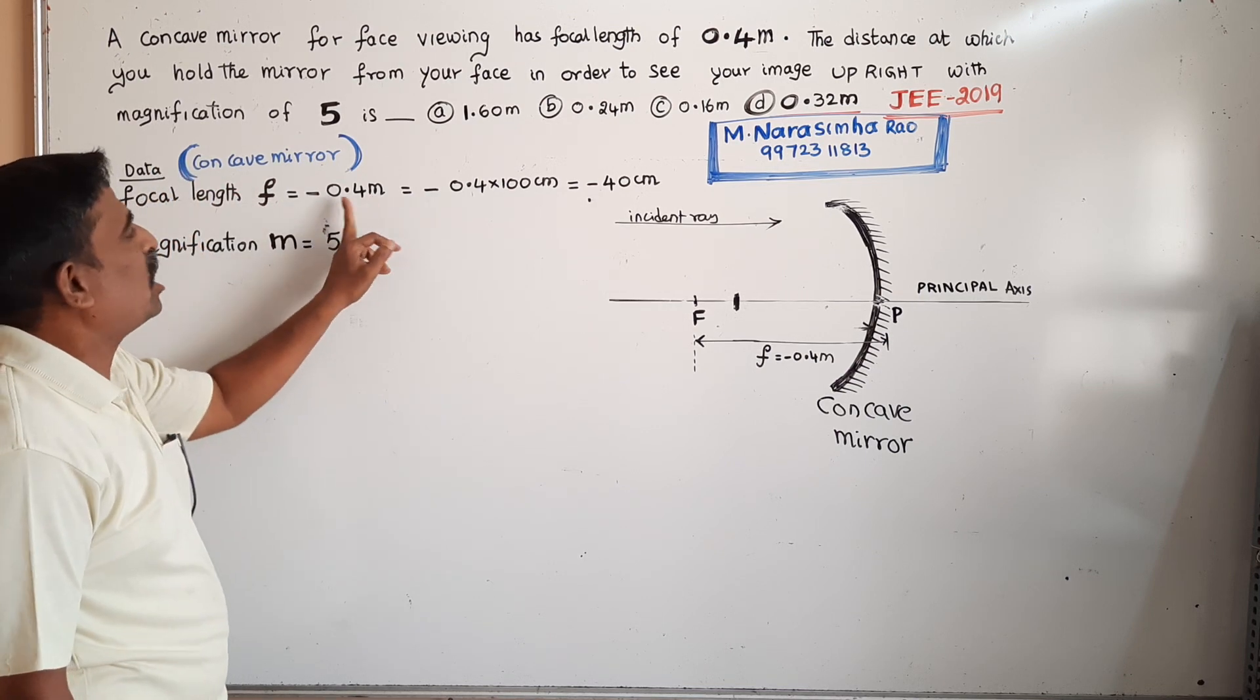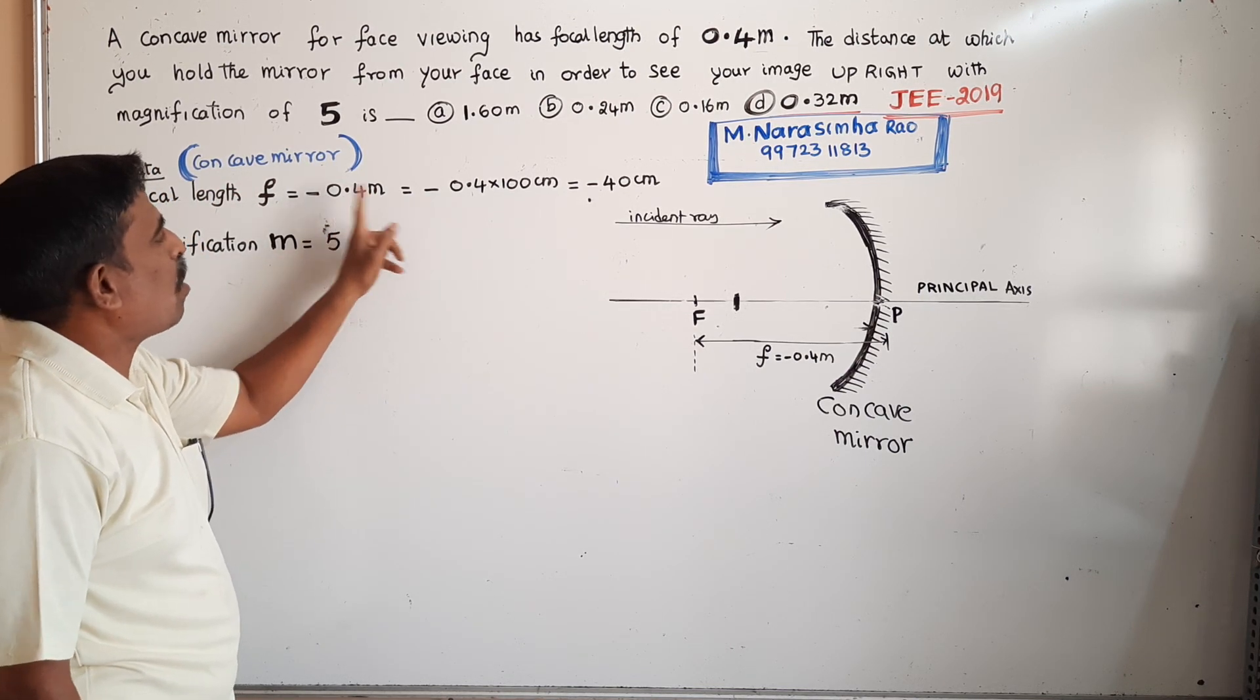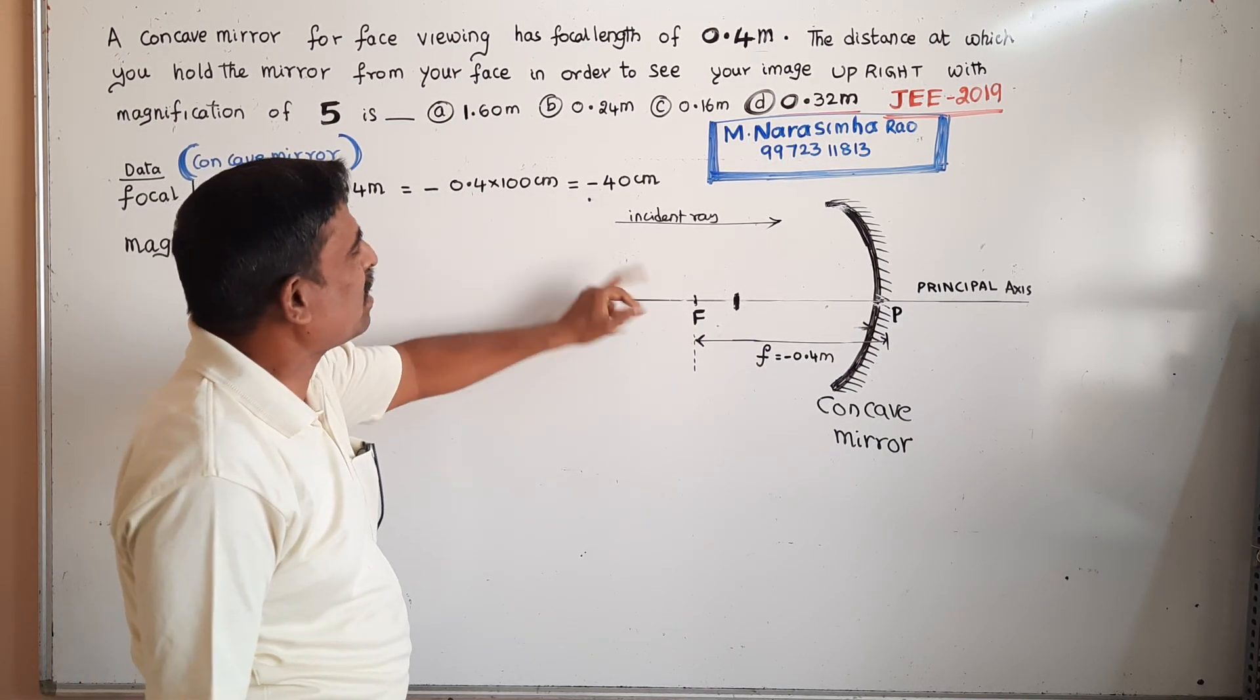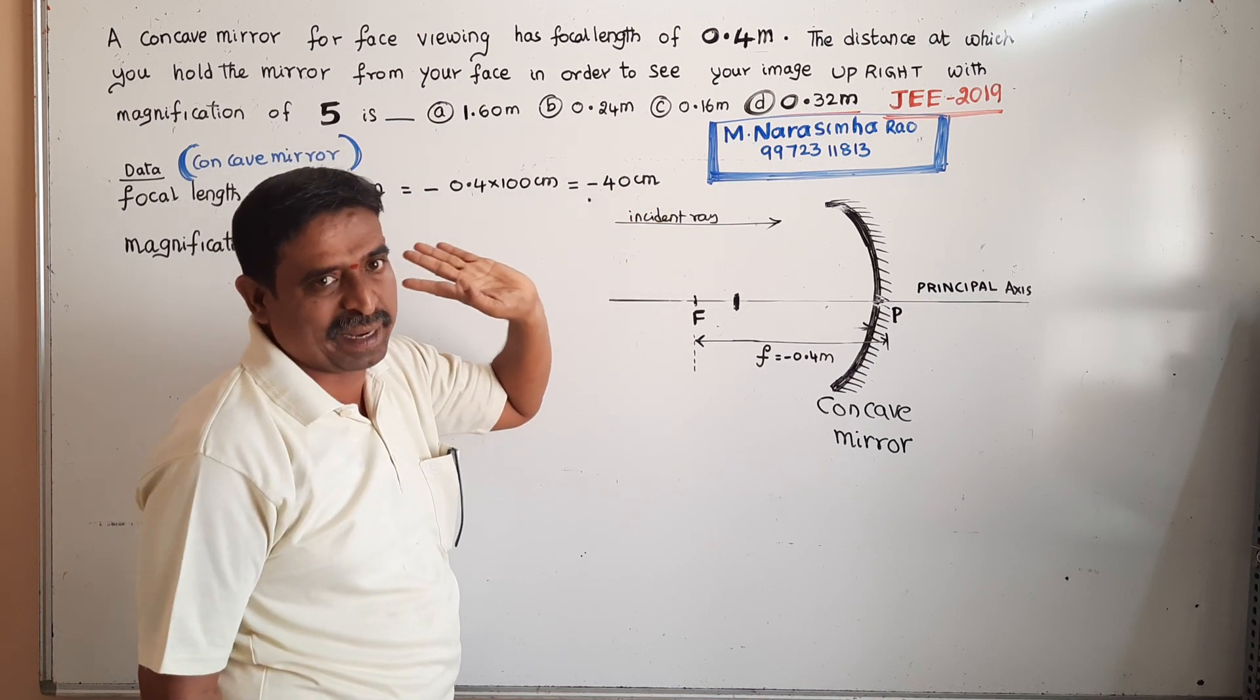Next, 0.4 meters. Since one meter equals 100 centimeters, I have converted this to 40 centimeters.